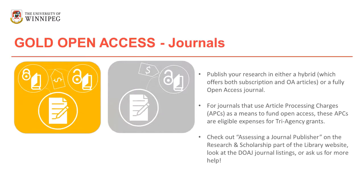The other option is to publish in gold or diamond open access journals. You can publish in a hybrid journal — incredibly common right now — where the entire volume may be paywalled but individuals can pay for particular articles to be made open access. Again, you want to know what those fees are and include them in your budget. There are also many fully open access journals where the entire journal is open access; if they don't charge fees, they're considered a diamond OA journal. We have tips on assessing these on our page, and there's also the Directory of Open Access Journals, which maintains standards that open access journals must follow.